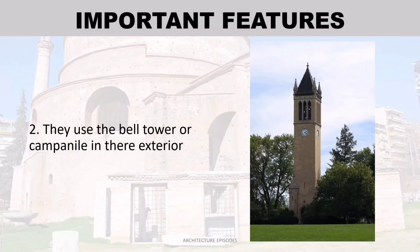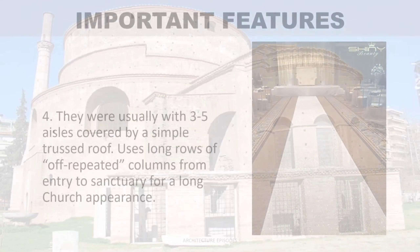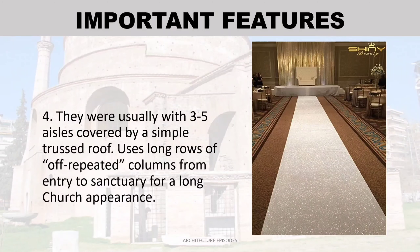They used the bell tower, or campanile, in their exterior. They had either closely spaced columns carrying the entablature, or more widely spaced columns carrying semi-circular arcs known as archivolt.